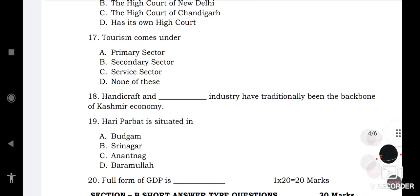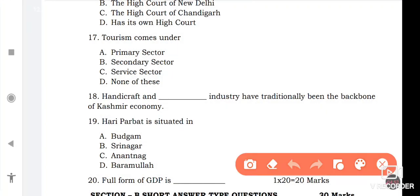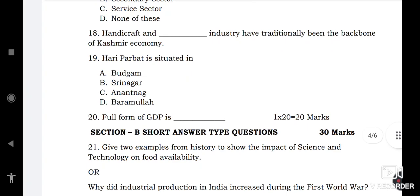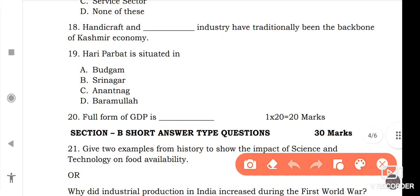Tourism comes under service sector. Handicraft and Dash industry have traditionally been the backbone of Kashmir economy. Handicraft and Handloom industry. Hari Parbat is situated in Srinagar. Full form of GDP is Gross Domestic Product.